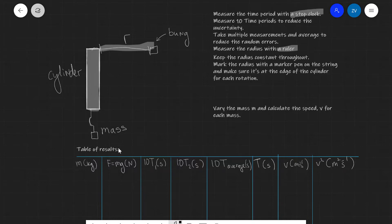Our table of results is going to look something like this. So we're going to have the mass, then we're going to have the force which is just m times g. This here is of course just a force from the mass straight down. It's going to be balanced out by the magnitude of the centripetal force.